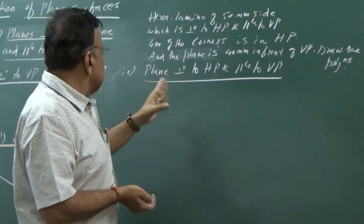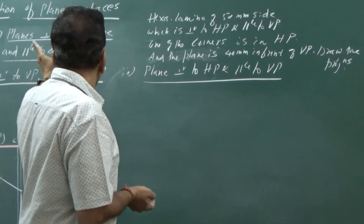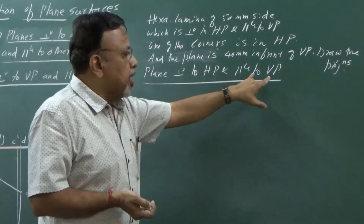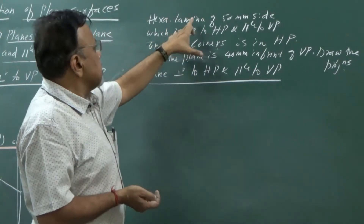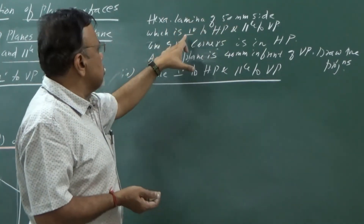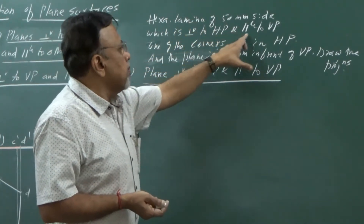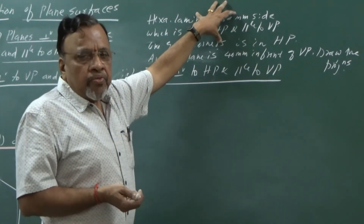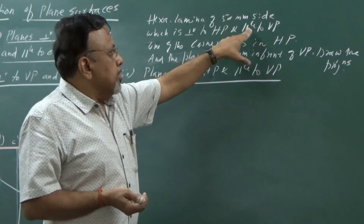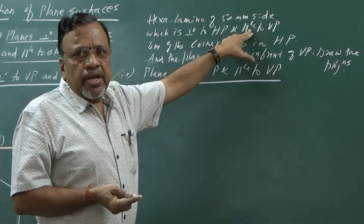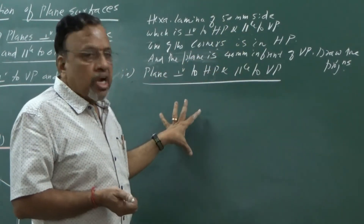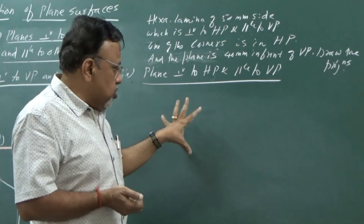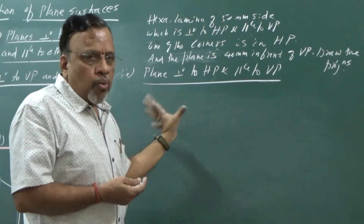Let us consider this second case - plane perpendicular to HP and parallel to VP. We have a hexagonal lamina of 50 mm side, perpendicular to HP and parallel to VP. By reading this statement, we can conclude the lamina is parallel to VP, so I need to start from the front view.